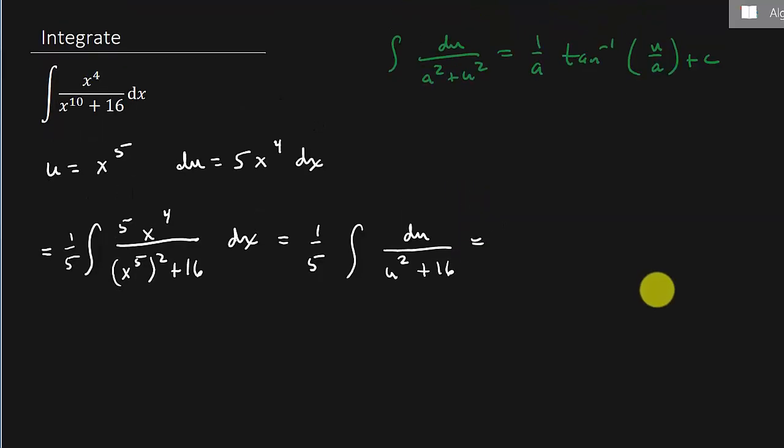Now just to make it look just like this formula here, let's write this as one fifth, and that's going to be du over 4 squared plus u squared. Okay, so I just wrote the 16 as 4 squared and then the u squared right here. And so you can see now I have this right here.